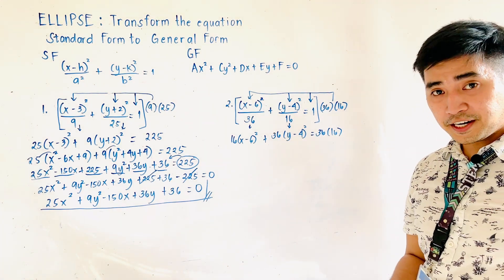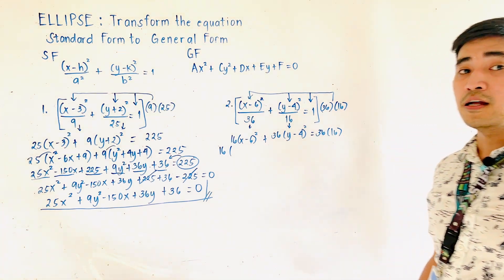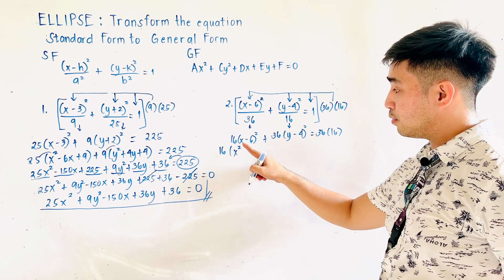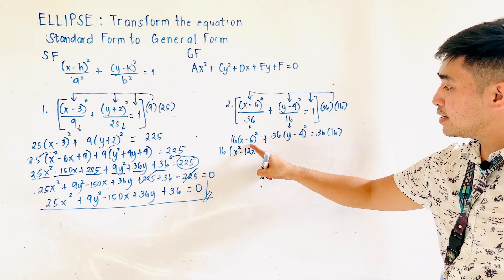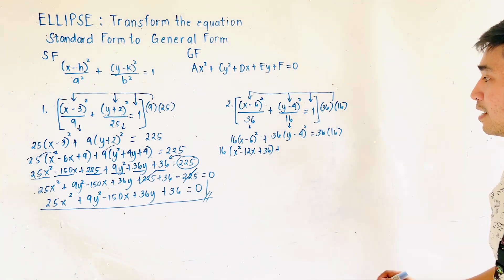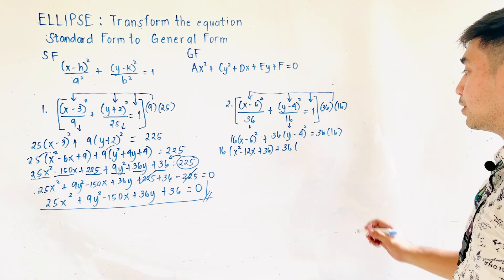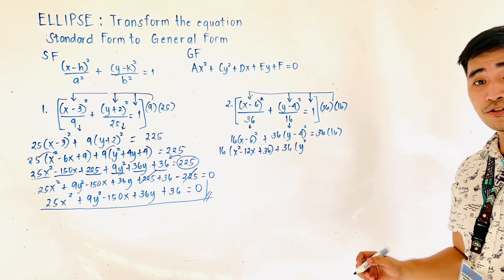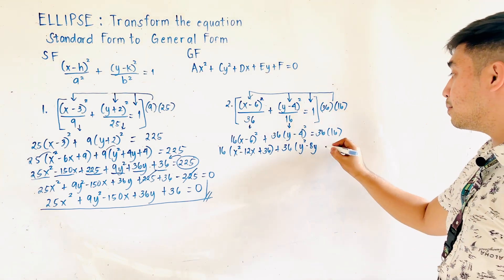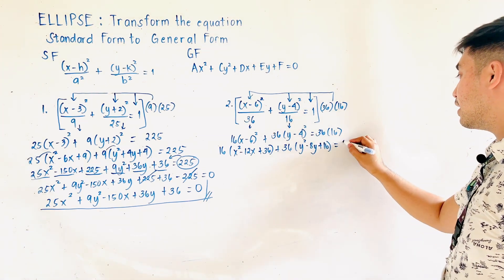We need to expand. 16 times the expansion of (x − 6)²: that is x² − 12x + 36. Plus, 36 times the expansion of (y − 4)²: that is y² − 8y + 16. This is equal to 36 times 16, which is 576.